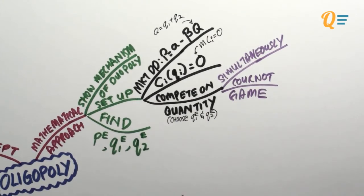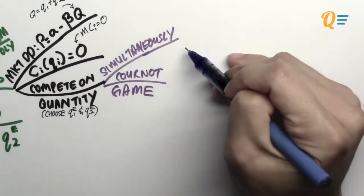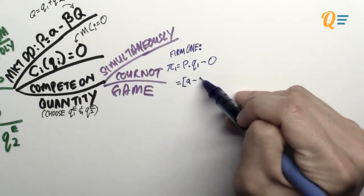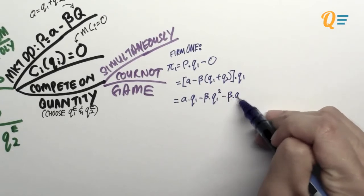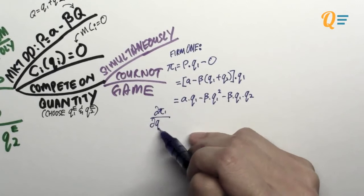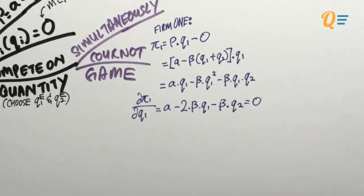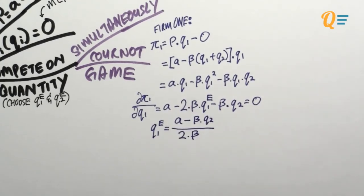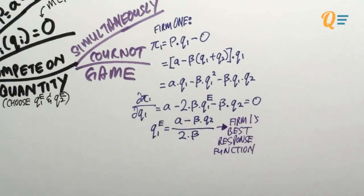The objective is to find the equilibrium price and equilibrium quantities of firm 1 and firm 2. Every firm has the objective of maximizing profits. We write down the profit function of firm 1 — revenue minus zero cost — replacing P with the demand function where Q is Q1 plus Q2. We expand the bracket, then differentiate this profit function with respect to Q1 to maximize profits. Solving for Q1E gives us firm 1's best response function — it's the best response because they're maximizing profits but are unsure what firm 2 will do.